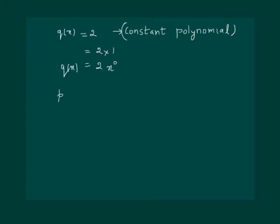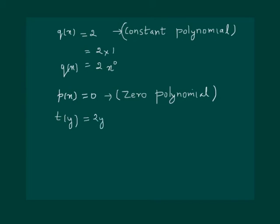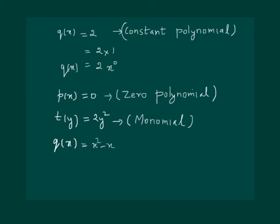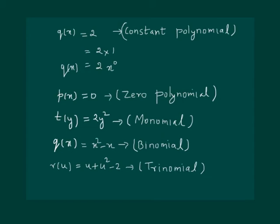If we have p(x) = 0, it is called the zero polynomial. A polynomial such as t(y) = 2y squared has only one term, so it is called a monomial. Similarly, a polynomial q(x) = x squared minus x has 2 terms, so it is called a binomial. A polynomial r(u) = u plus u squared minus 2 has 3 terms, so it is called a trinomial.